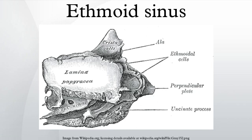The ethmoidal cells are not present at birth; however, by two years of age they are recognizable through the use of computerized tomography scanning.